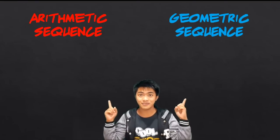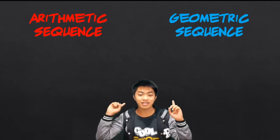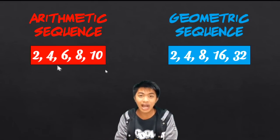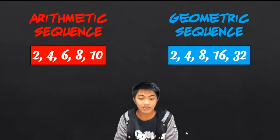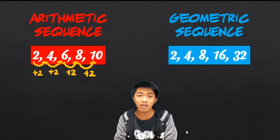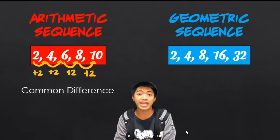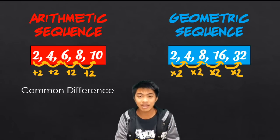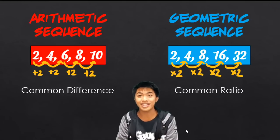We also talked about the major types of a sequence. We have the arithmetic sequence and the geometric sequence. In an arithmetic sequence, we are adding a fixed number — in this case, we are adding 2 — and we call that number the common difference. In a geometric sequence, we are multiplying a fixed number, and the number used to multiply is called the common ratio.